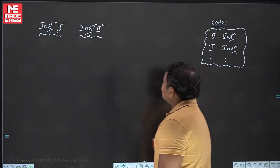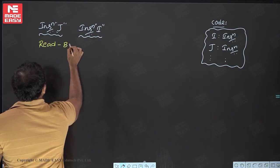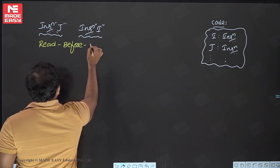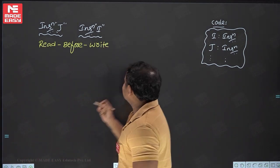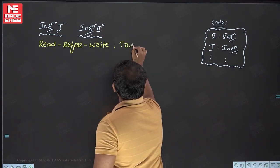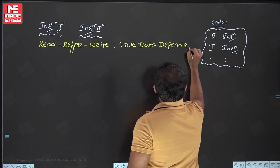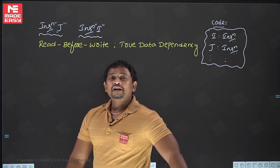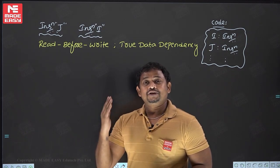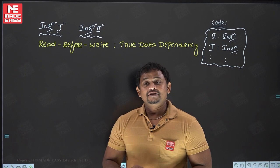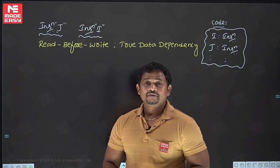Data dependency conditions are as follows. First, true data dependency: instruction J tries to read the data before instruction I writes it — J reads before I writes. Second, anti-data dependency: instruction J writes the data before instruction I reads it. Third, output data dependency: instruction J writes the data before instruction I writes it.